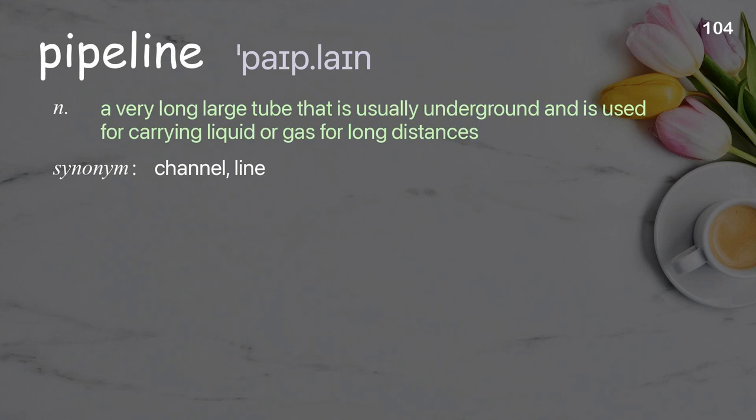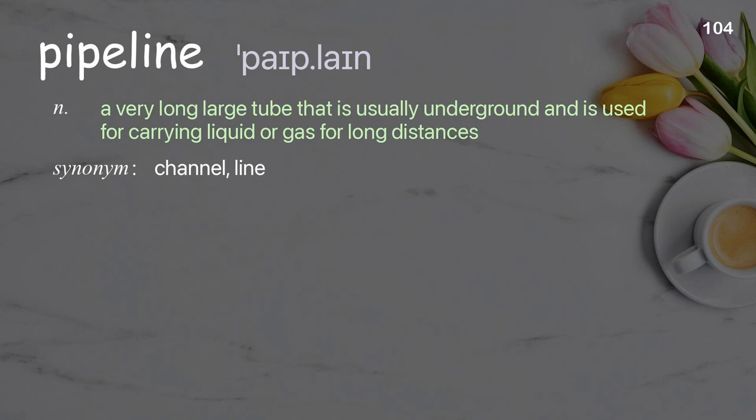Pipeline: A very long large tube that is usually underground and is used for carrying liquid or gas for long distances. Examples: a data pipeline, pipeline facilities. Rebels sabotaged the main pipeline supplying oil.